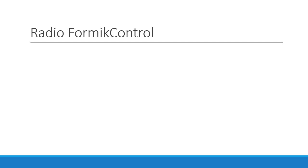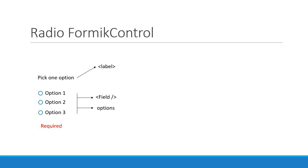In the UI, the radio buttons Formik control would look like this. There are three distinct elements: a form label which is nothing but a label HTML element, a form input which is the field component from Formik, and finally the field error which is an error message component again from Formik. The field though is actually a list of HTML input and label elements which allows you to make only one selection. This has to be considered when creating a radio buttons component.